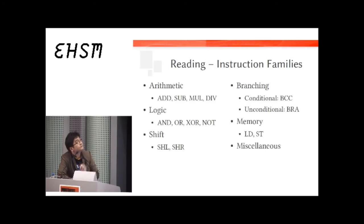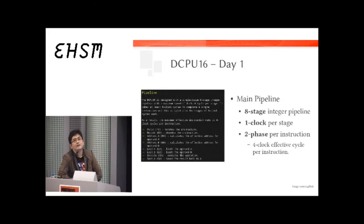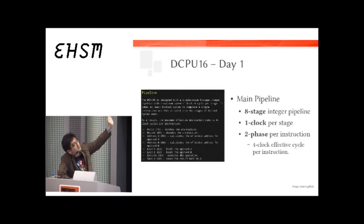On day one or two, we've got to figure out the pipeline. A pipeline is basically a sequence of steps that a processor takes to execute any single instruction. For the classic 5-stage RISC pipeline it's: instruction fetch, decode, execute, memory access, and write back. This is a very critical stage — if you get the pipeline wrong, the processor will never work.